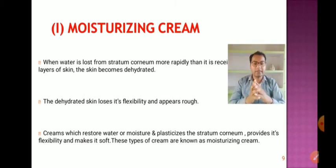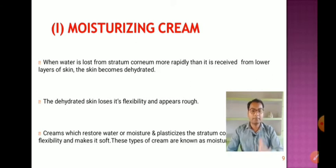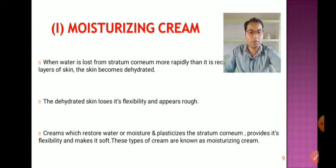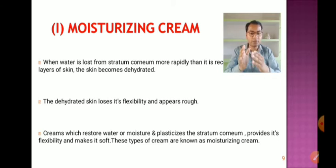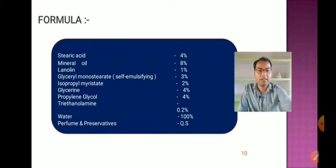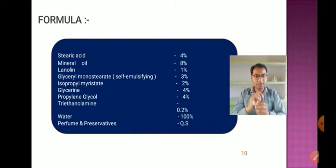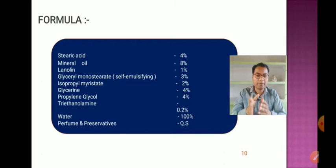Moisturizing cream: when water is lost from the stratum corneum more rapidly than it is received from lower skin layers, the skin becomes dehydrated, loses flexibility, and appears rough. Creams that restore moisture and plasticize the stratum corneum are called moisturizing creams. Key ingredients include stearic acid, mineral oil, lanolin, glyceryl monostearate, isopropyl myristate, glycerine, propylene glycol, triethanolamine, water, perfumes, and preservatives.